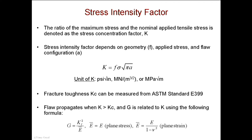K has units of MPa times the square root of meters — stress units times the square root of length. The fracture toughness of a material can be measured using ASTM standard E399 — this is a material property measurable for steel, aluminum, or whatever you're working on. You can then convert this fracture toughness Kc to G, the critical energy release rate, by squaring K and dividing by the modulus.